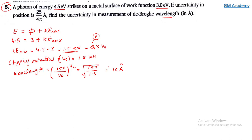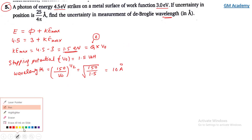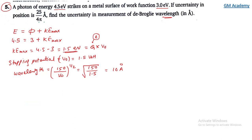Wavelength λ = 10 angstrom. The uncertainty in position Δx is given as 25/(4π) angstrom. We need to calculate Δλ. Using the Heisenberg uncertainty principle: Δx · Δp = h/(4π).